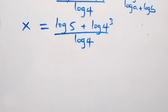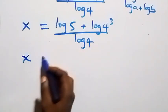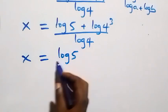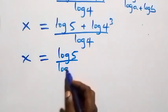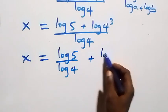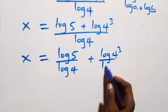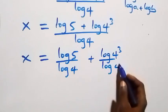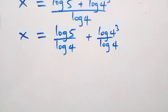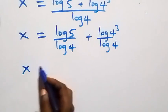We separate this into two fractions: x equals log 5 over log 4, plus log of 4 raised to power 3 over log 4. Then applying the power law of logarithms, the 3 comes down.